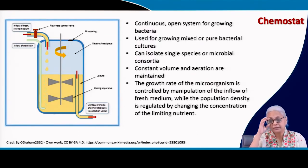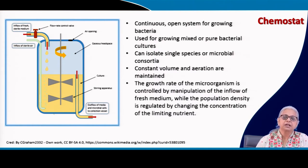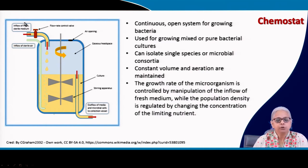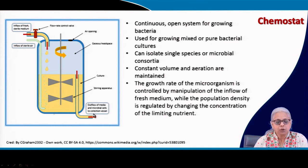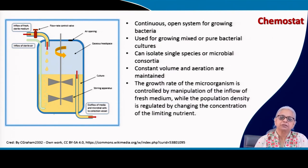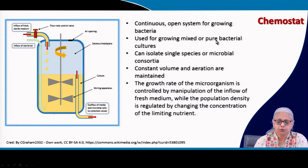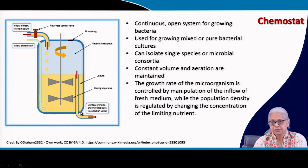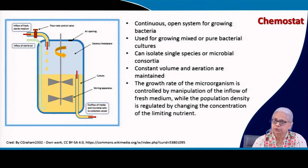Let us start with a simple chemostat. A chemostat, unlike a batch culture, is a continuous flowing reactor. You have an inflow of fresh sterile medium coming in at one end, it is completely mixed inside the reactor, and you have an output of the media along with the microbial cells growing within the chemostat. Therefore, it is a continuous open system for growing bacteria, generally used in the lab for culturing bacteria on a continuous basis. You can use it for mixed cultures or pure cultures, isolate single species or use microbial consortia. It is generally constant volume, and you have to provide aeration if running it for aerobic heterotrophic bacteria.